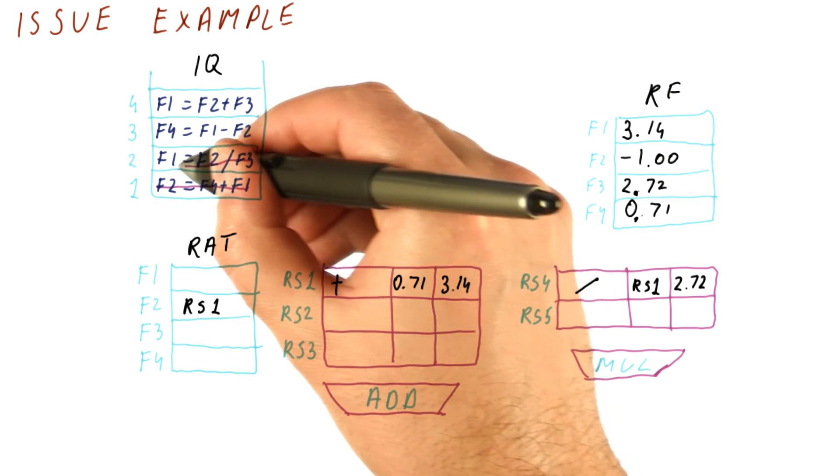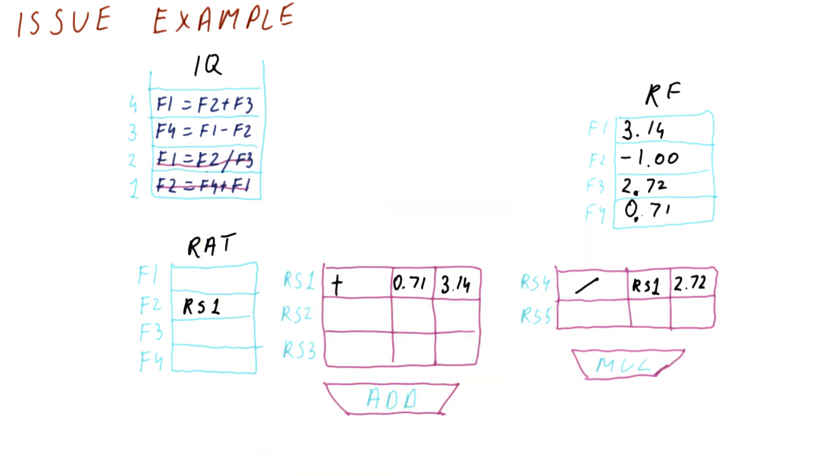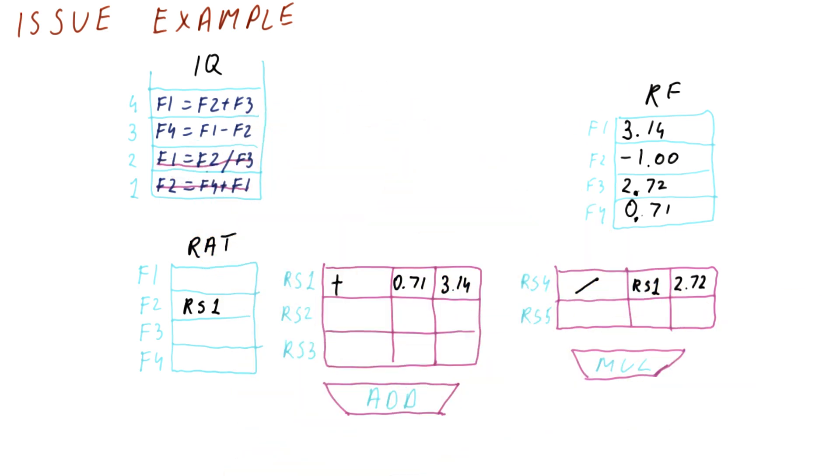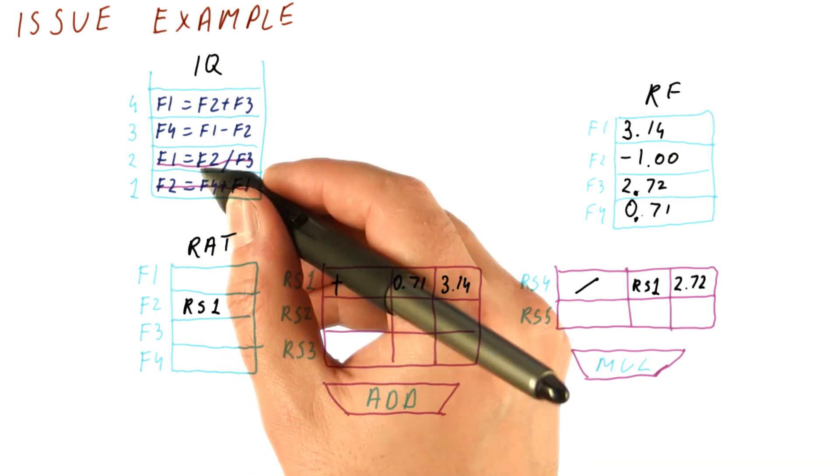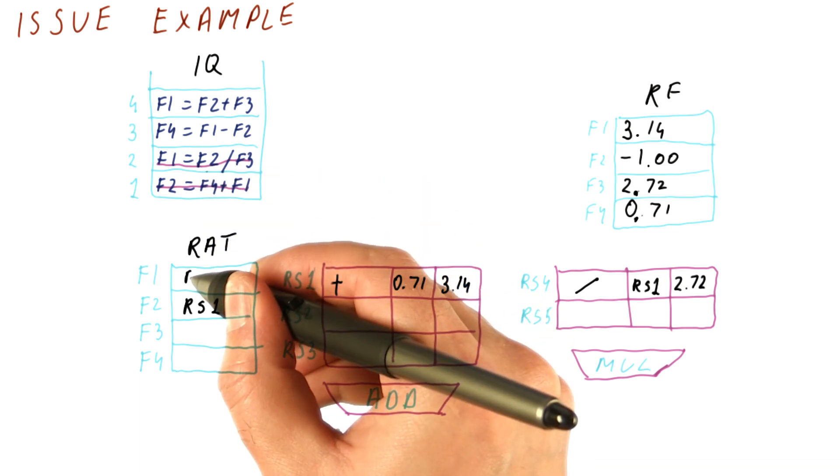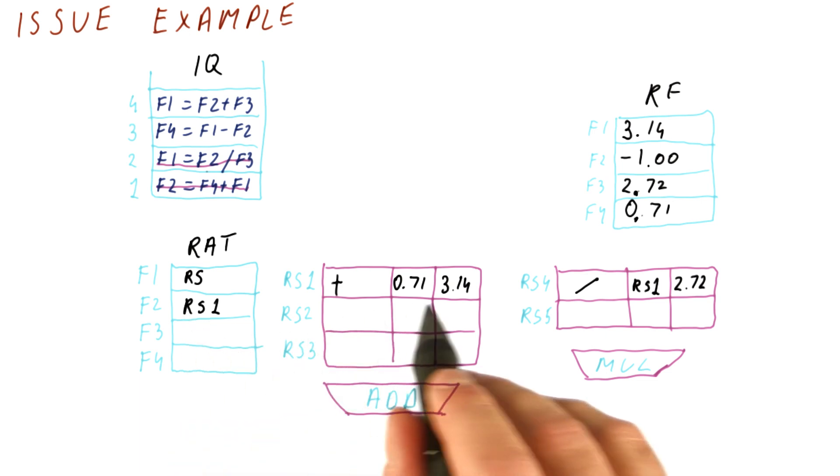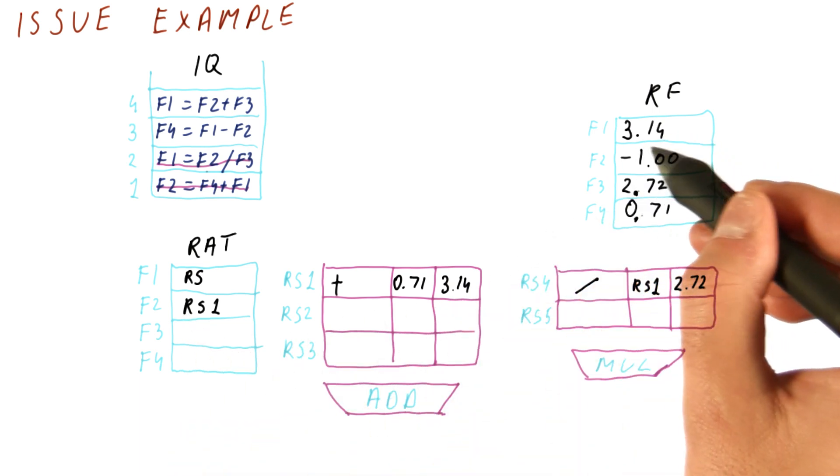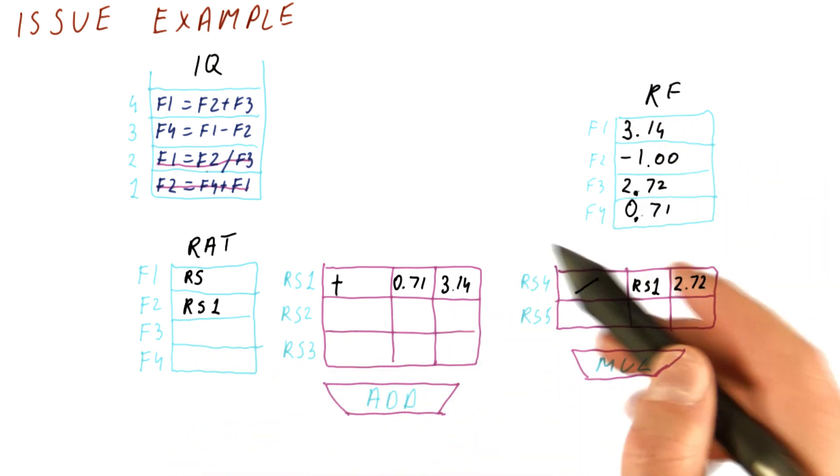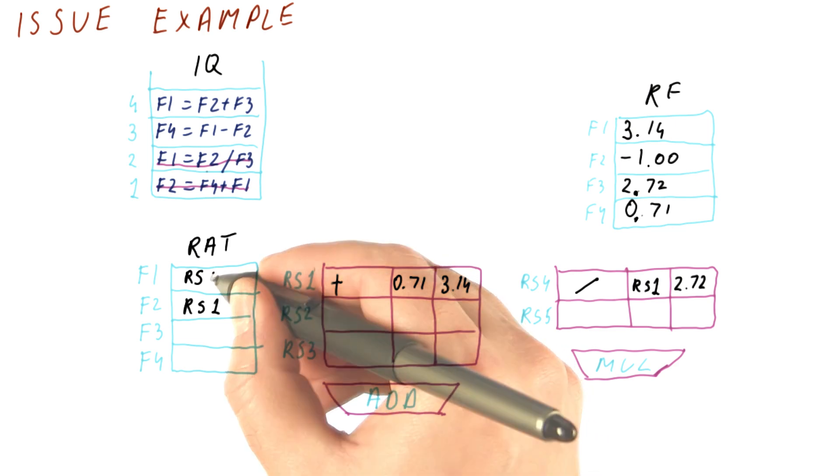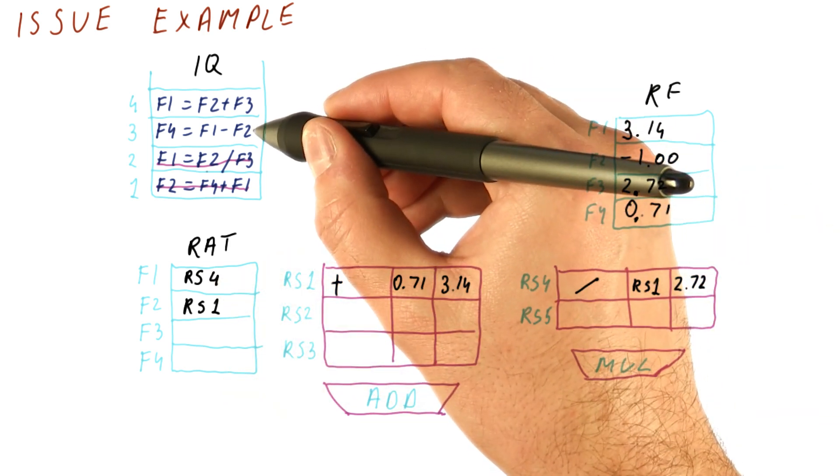And we're going to now mark this instruction as, we're going to basically take it out of the issue queue. And this is very easy to forget. But when we do that, we need to mark that the result, the F1 is from now on not going to be coming from here. It's going to be coming from reservation station 4. And we're going to issue this instruction 2.